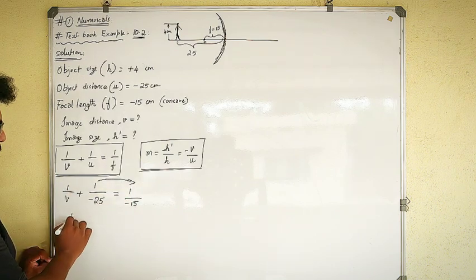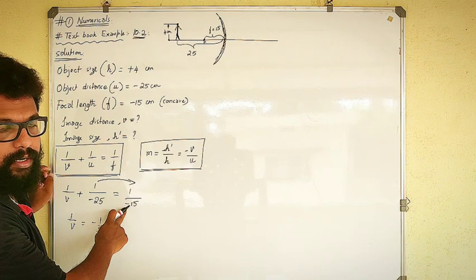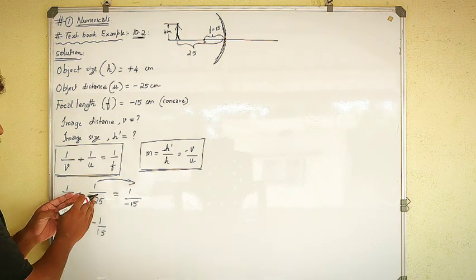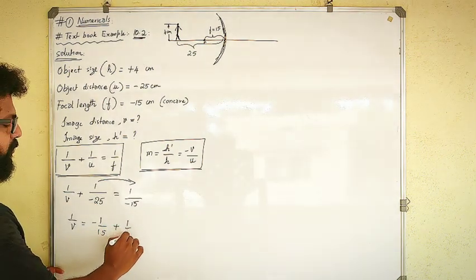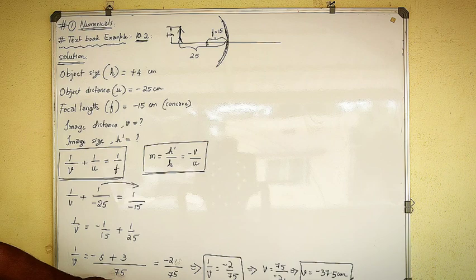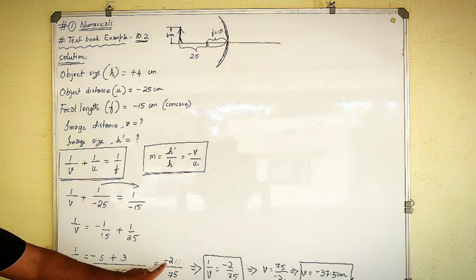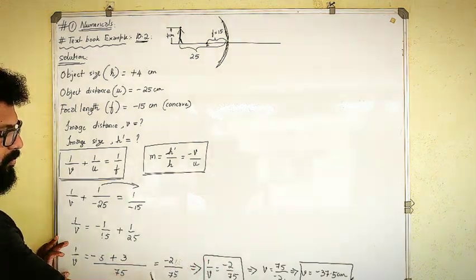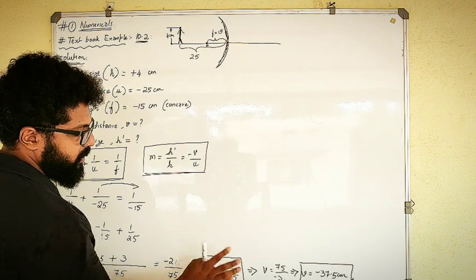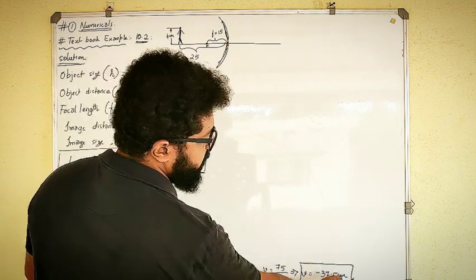I shift 1/U to the other side to find V. So 1/V = 1/F − 1/U = −1/15 − (−1/25) = −1/15 + 1/25. The negative sign makes the whole fraction negative; when shifted, it becomes positive. Taking LCM of 15 and 25, which is 75: this gives −5/75 + 3/75 = −2/75. Therefore 1/V = −2/75, and taking the reciprocal, V = −75/2 = −37.5 cm.